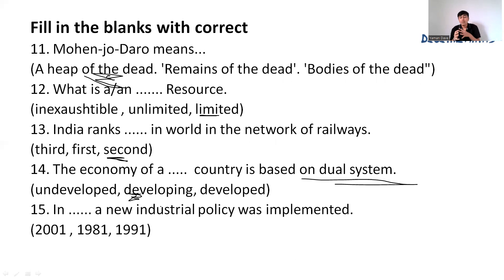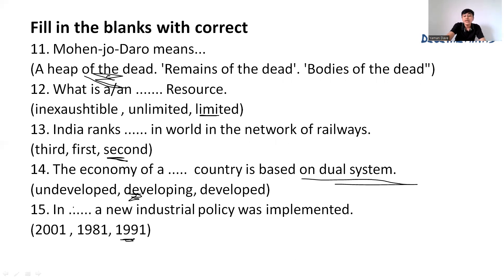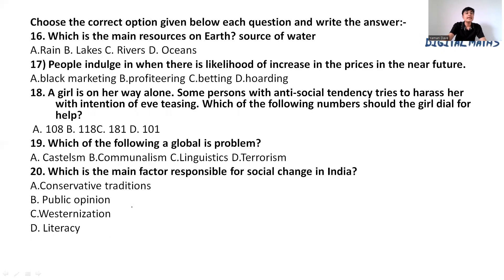Q15: A new industrial policy was implemented in India in which year — 2001, 1981, or 1991? The answer is 1991. In 1991, a new industrial policy was implemented in India. That completes the fill in the blanks.